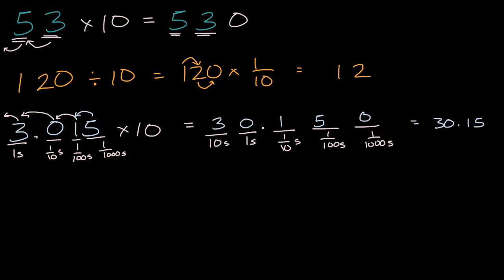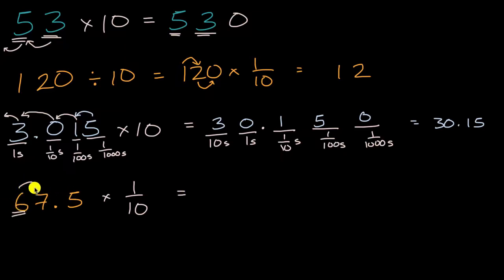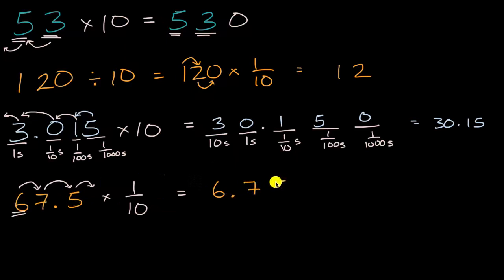Now we could think about the other way around. What if I were to take 67.5 and divide it by 10 — or another way of thinking about it, multiply it by one tenth? Pause the video and see if you can figure that out. Well, every digit is going to shift one place to the right. The six is going to be in the ones place, the seven is going to go into the tenths place, and the five is going to go into the hundredths place. So we get 6.75.